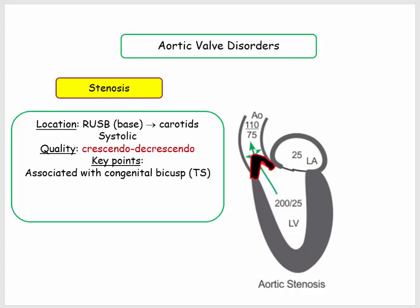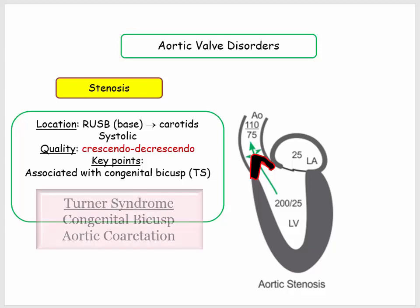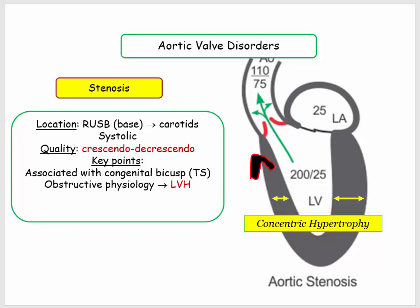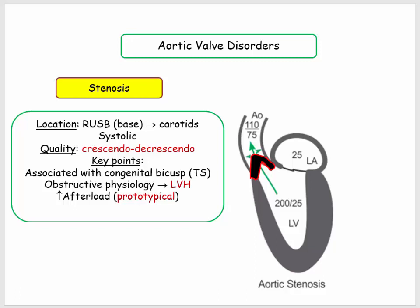First, be familiar with the association of aortic stenosis with the congenital bicuspid valve, and be aware that congenital bicuspid is one of two cardiac manifestations associated with Turner syndrome, the other being coarctation. The obstructive physiology gives rise to LVH, specifically described as concentric hypertrophy. We will contrast this with the eccentric hypertrophy of aortic insufficiency and the asymmetric septal hypertrophy of hypertrophic cardiomyopathy. Following from the obstructive physiology will be derivatives related to increased afterload.